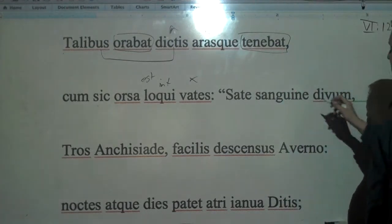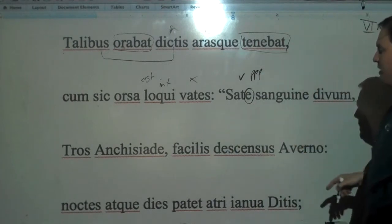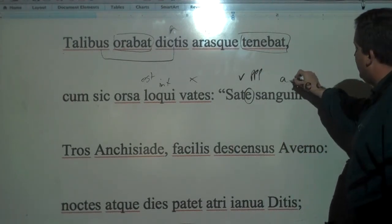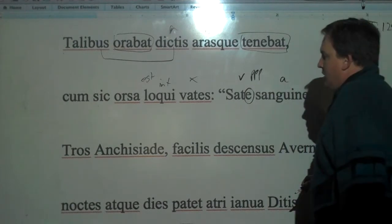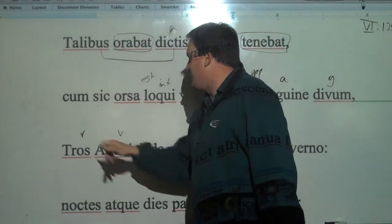He just said sate sanguine divum. This is a nice vocative, E, PPP in the vocative referring to a guy, so it ends in E. Having been born from the blood of the gods, O Trojan, son of Anchises - all vocatives.